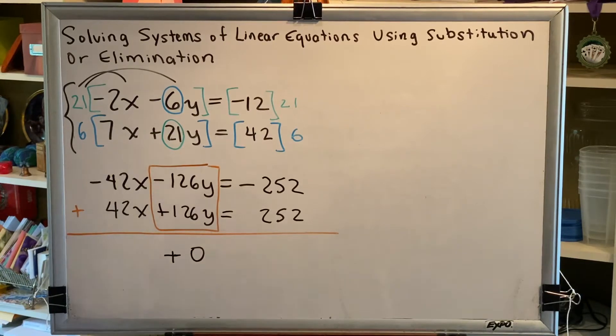So this problem is going to be one of our interesting problems, where we're going to find that all of the variables will disappear, which means we're dealing with one of the special cases. Parallel lines, where the solution is no solution, or coincident lines, where the solution is all real numbers. Let's find out which one it is for this problem.